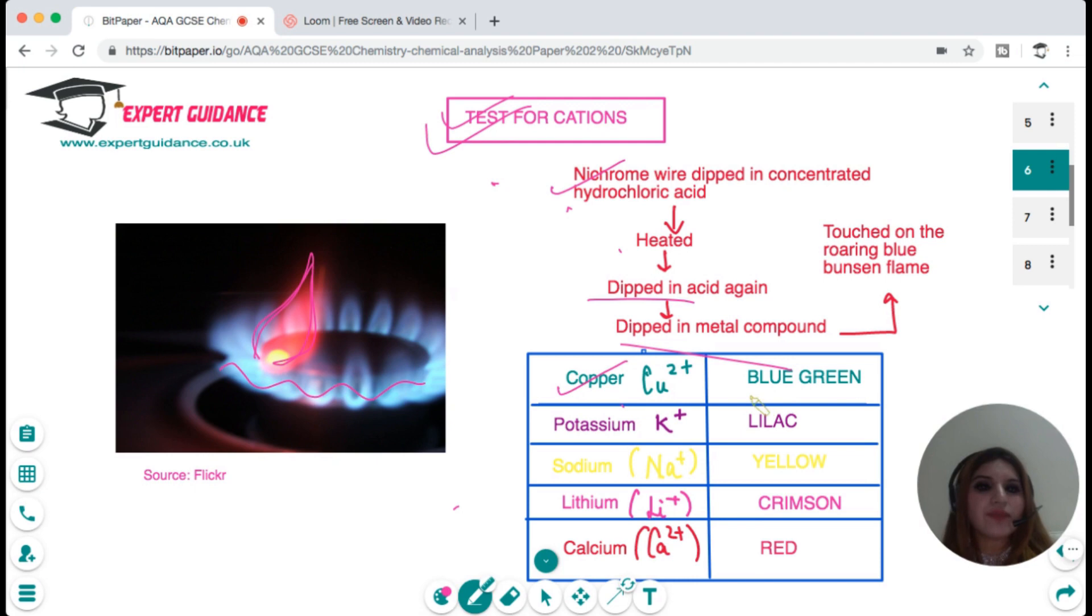For example, copper ion produces a blue-green flame, potassium K+ produces a lilac flame, sodium produces a yellow flame, lithium produces a crimson flame, and calcium produces a red flame. You should remember these ions.